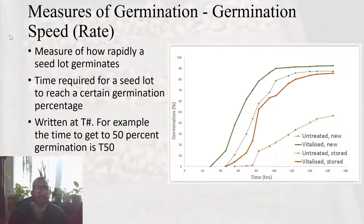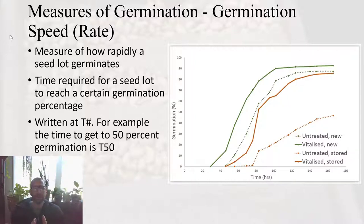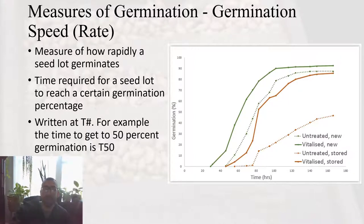We can also measure germination speed — sometimes referred to as rate — and this measures how rapidly a seedlot germinates. Instead of how many, we're looking at how fast they germinate. Typically we set a time to reach a certain germination percentage, written as T and a number. For example, T50 is the time it takes for 50% of the seedlot to germinate. You measure how many seeds germinate each day or by hour, as shown in a graph, and then determine how long it took to reach 50% germination.